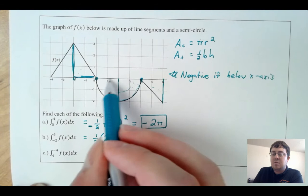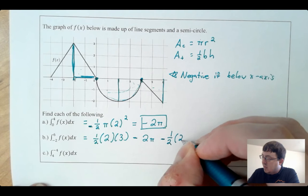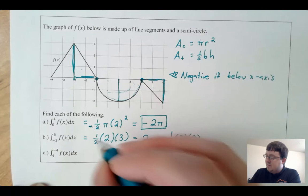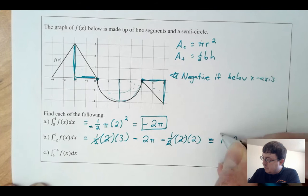Then minus, because this triangle from 4 to 6 is also below the x-axis: one half times base 2 times height 2. The one-halves and the twos cancel, giving me 3 minus 2, which is 1, minus 2π. So my answer here is 1 minus 2π. The negative 2π I just took from what I had already done — I don't want to do the work again.